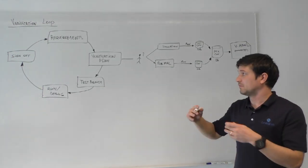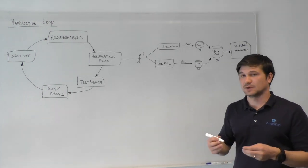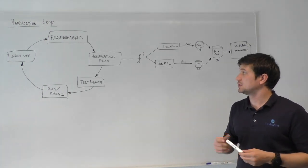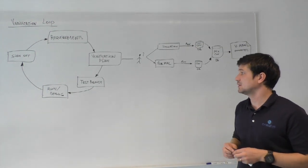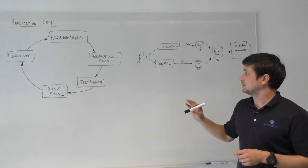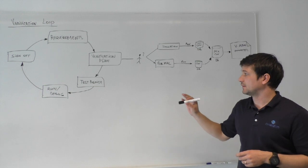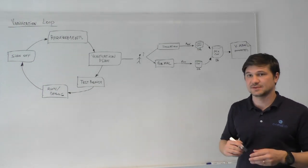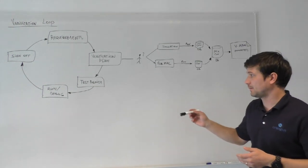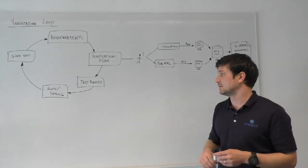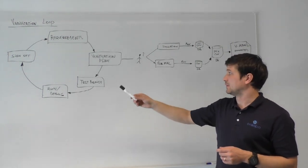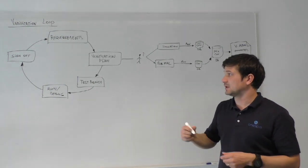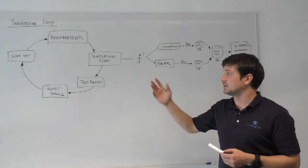In a verification flow, everything starts from requirements and specification, from which a verification plan is derived by verification engineers. For this verification plan, engineers or designers write test benches, which are afterwards run and debugged, and this goes back into the verification plan in which items are ticked and the design is ready to sign off.